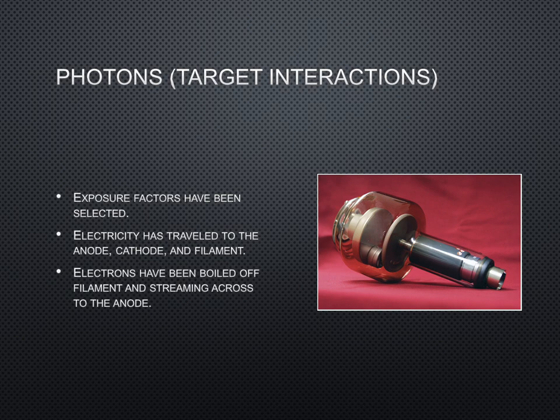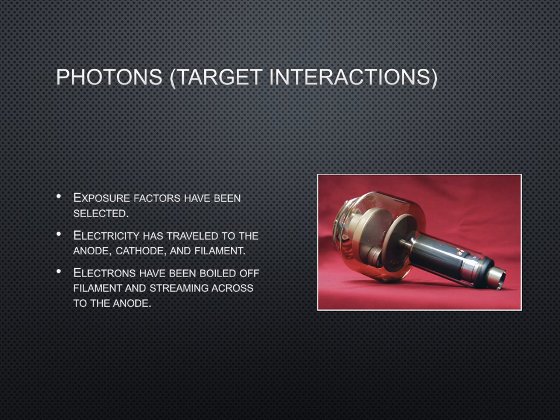The picture on this slide illustrates the inside of a general purpose x-ray tube. This may look familiar if you watched my video about the x-ray tube. Exposure factors have now been selected. Electricity has traveled to the anode, the cathode, and the filament. Electrons have been boiled off of the filament and are streaming across to the anode at tremendous speeds. The filament electrons penetrate the face of the target to a depth of approximately 0.5 millimeters and interact with the tungsten target atoms in their path.